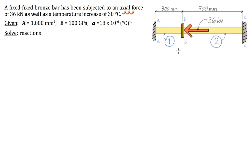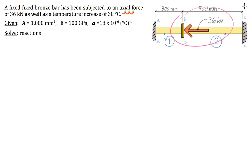In this problem, we are looking at a fixed-fixed bronze bar. It has been subjected to a 36 kilonewton axial force — we call it axial because it's running down the length of the member, directly down the longitudinal axis. In addition to that applied force, we're also going to hit it with a temperature increase of 30 degrees Celsius.